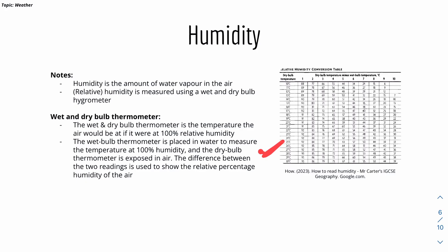The wet bulb thermometer, basically there are two parts to this. In this wet and dry bulb thermometer, there's a wet bulb thermometer and there's a dry bulb thermometer. The wet bulb thermometer is placed in water to measure the temperature at 100% humidity. Because it's essentially in water.